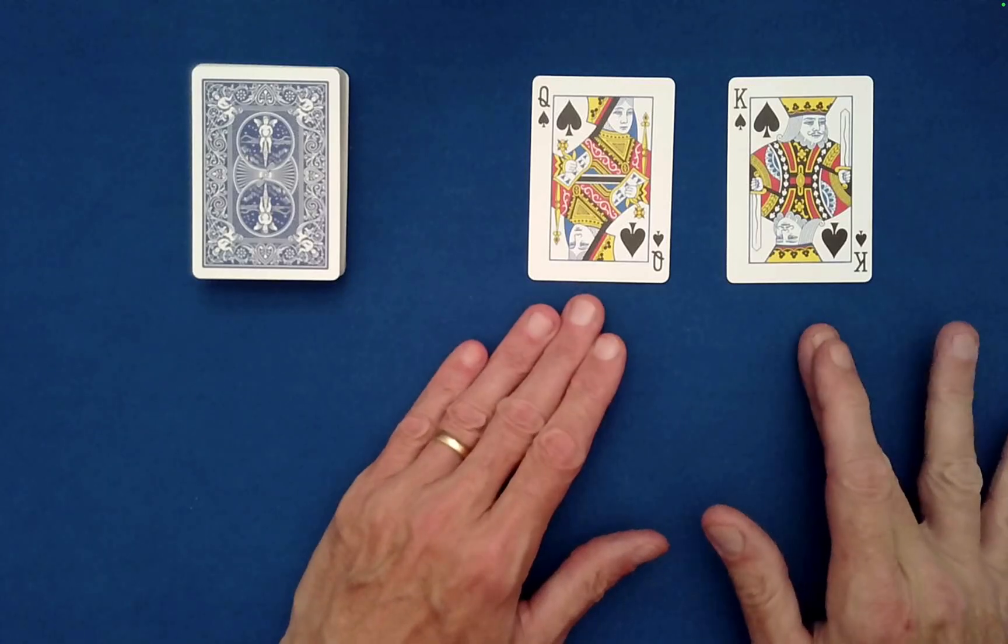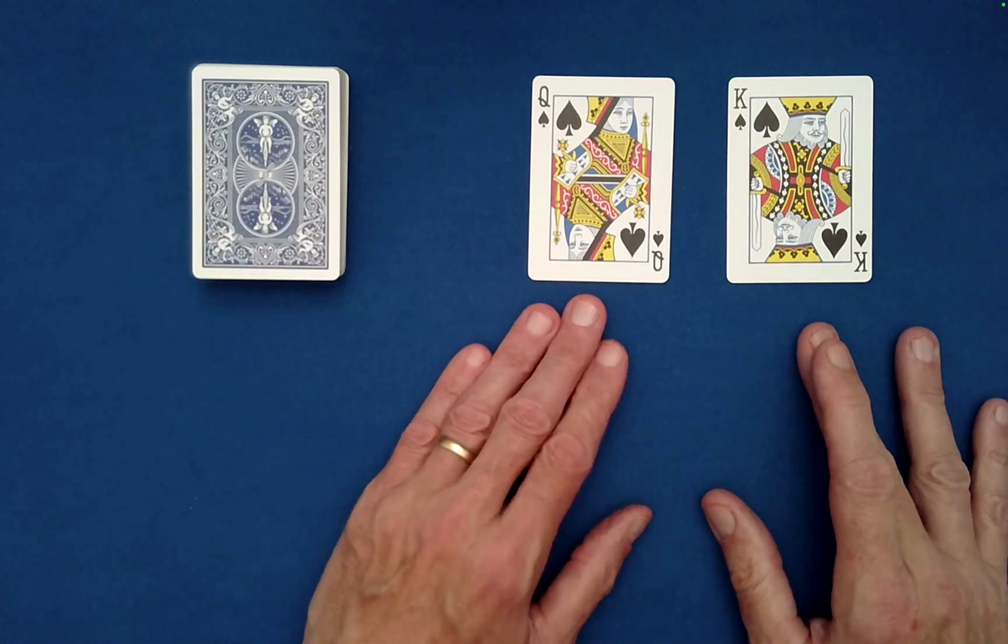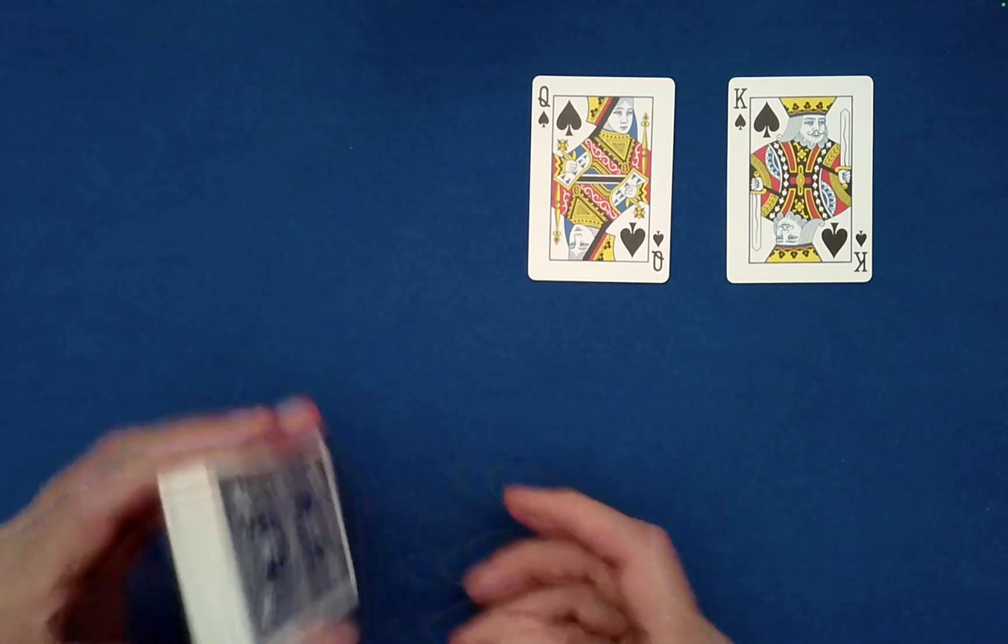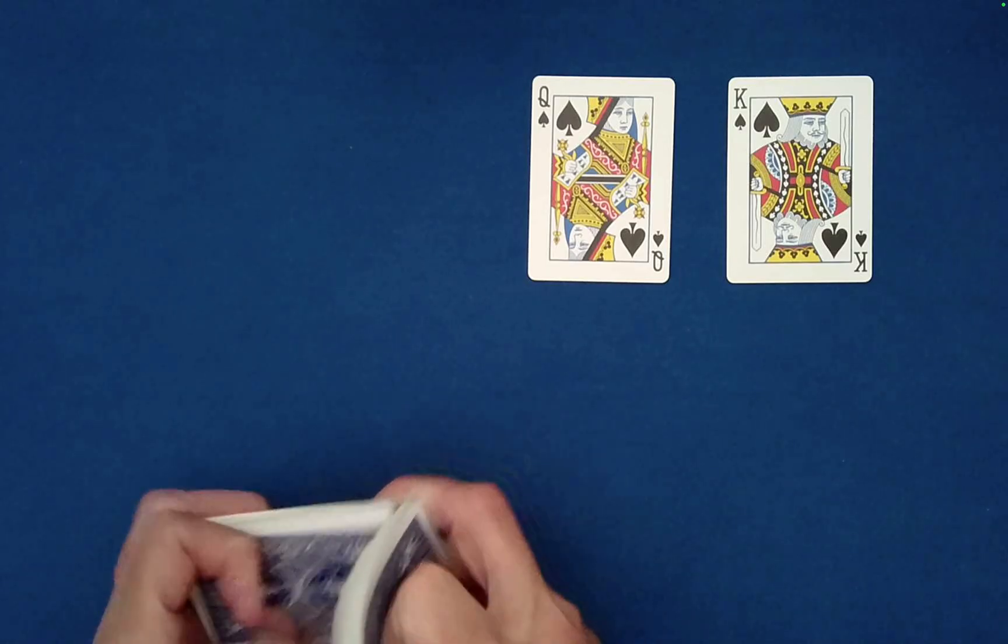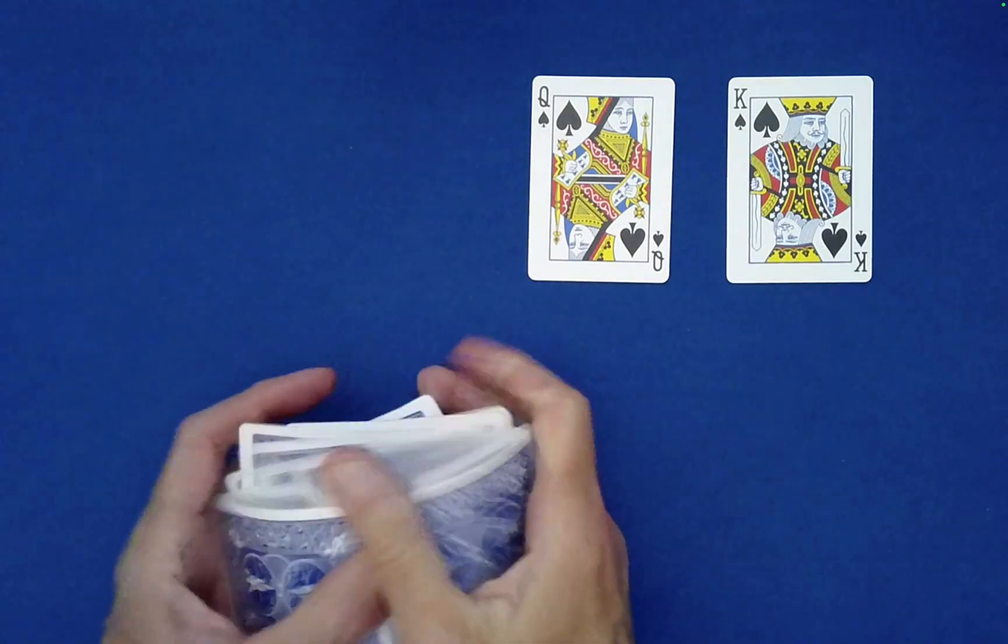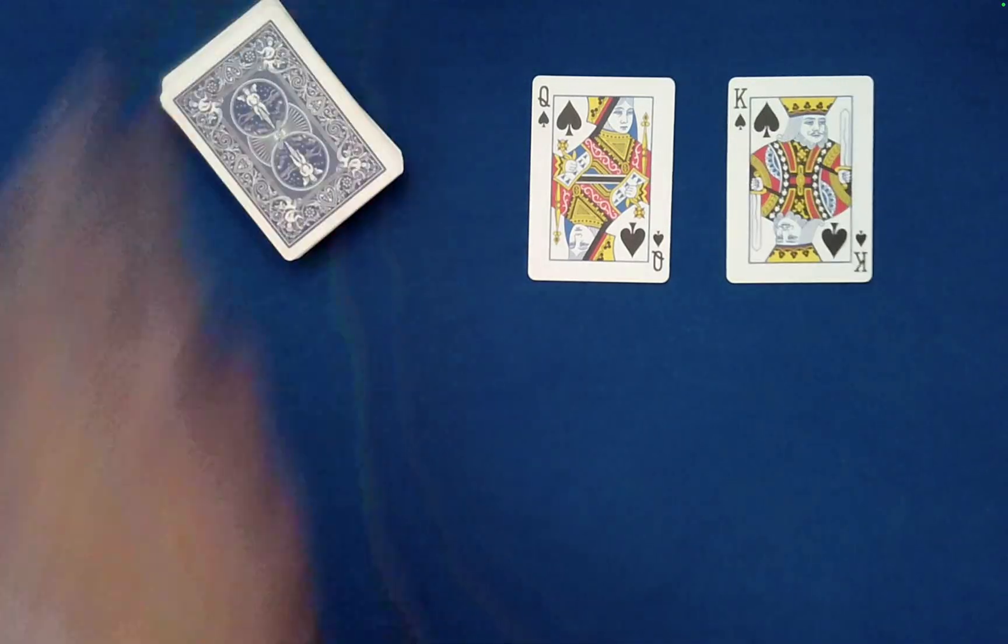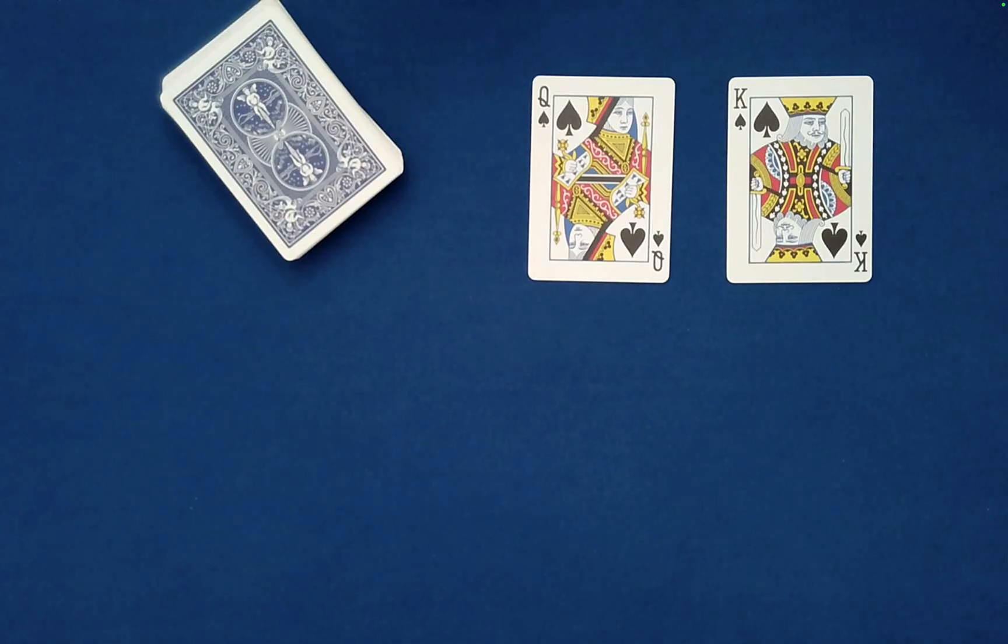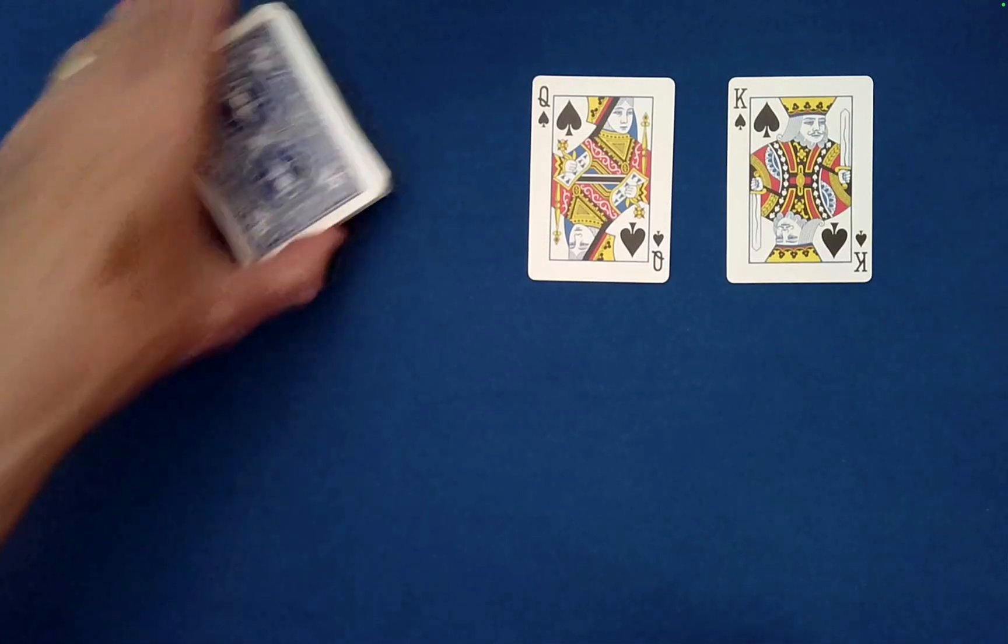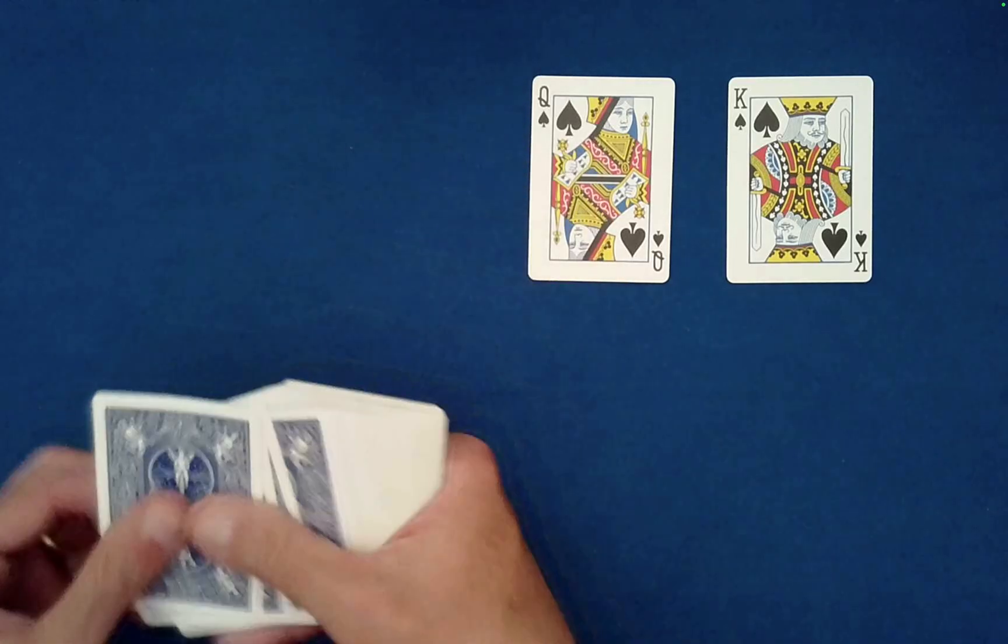For this, you need the King and Queen of Spades and 11 random cards chosen by the spectator. The cards can be mixed. In fact, the spectator can handle the cards and do everything, as you'll see. So have them choose 11 random cards.